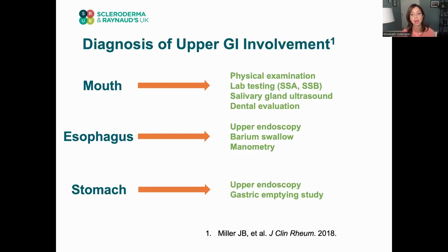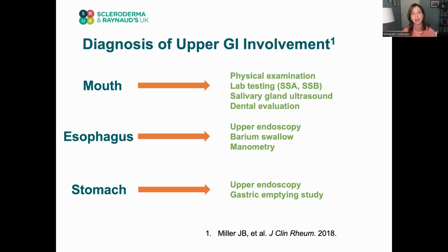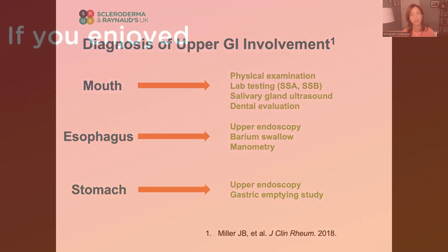For the stomach, we can also use upper endoscopy — looking down with a camera into the stomach to check for blood vessel changes, any bleeding, or anything that needs to be biopsied. A gastric emptying study looks for delayed gastric emptying. This test typically involves eating something that is radiolabeled so that imaging can show where it is and how long it takes to get out of the stomach.